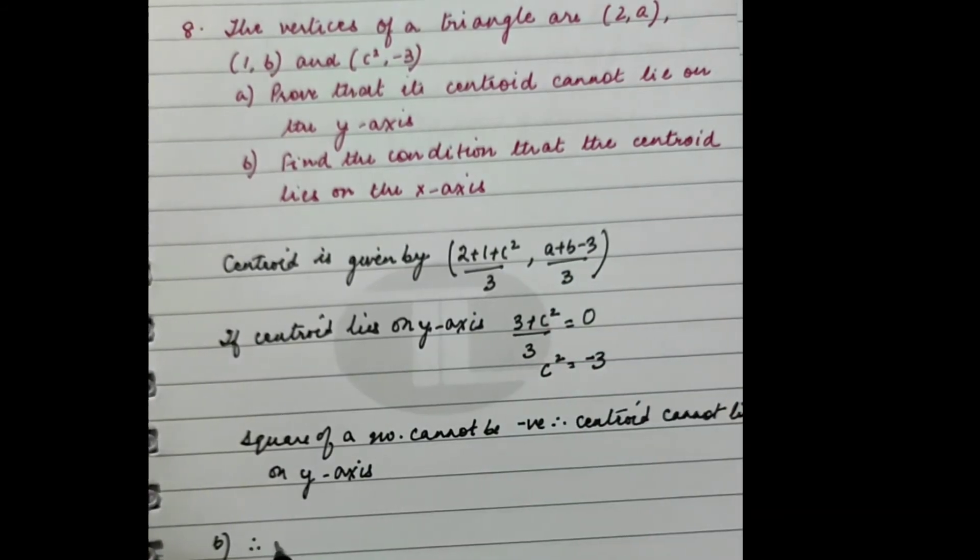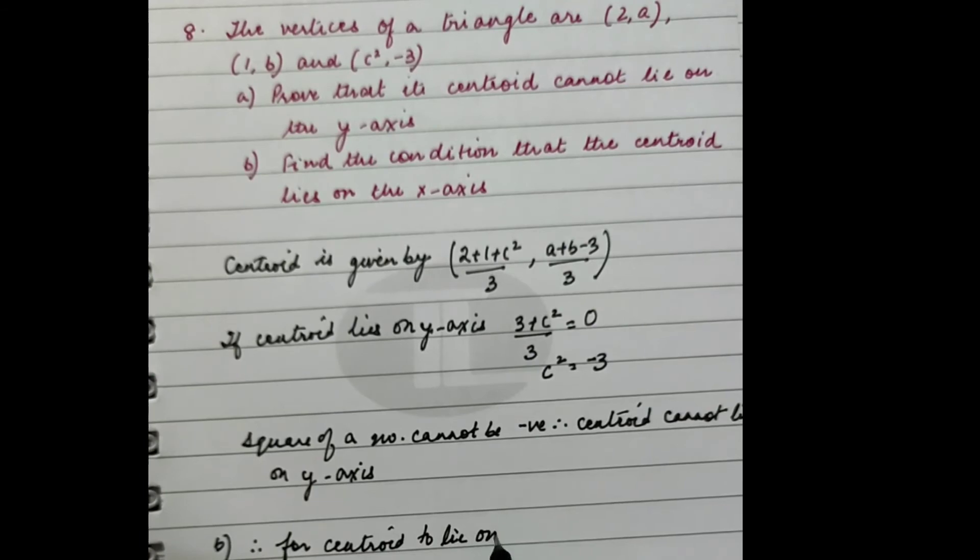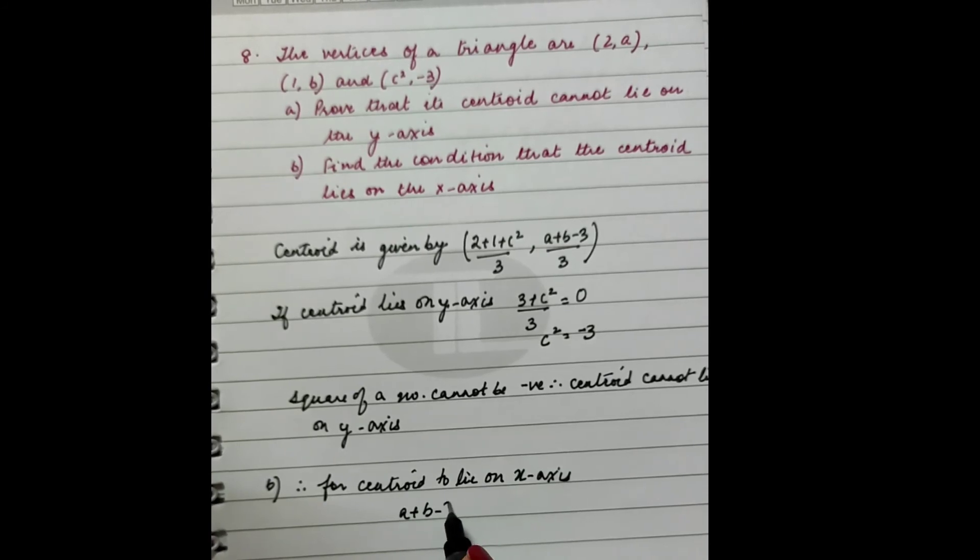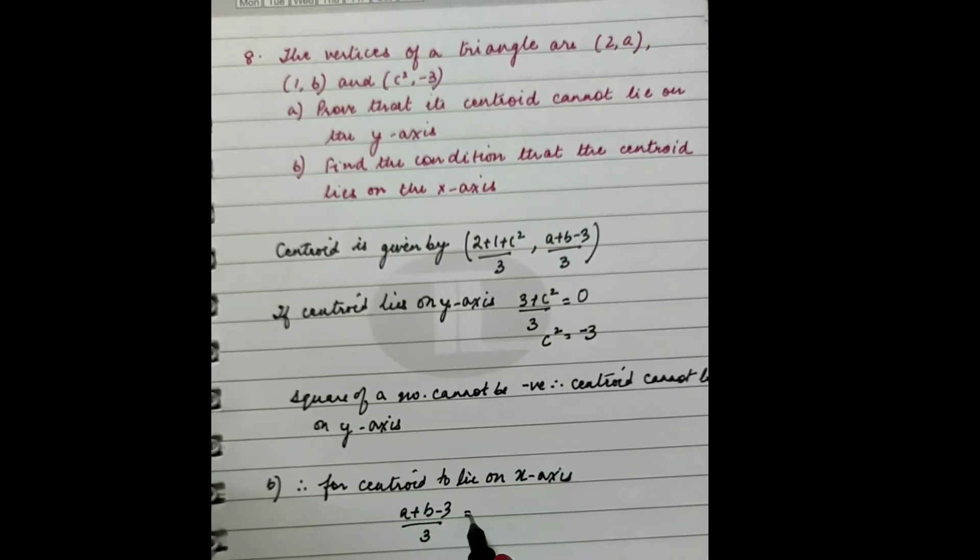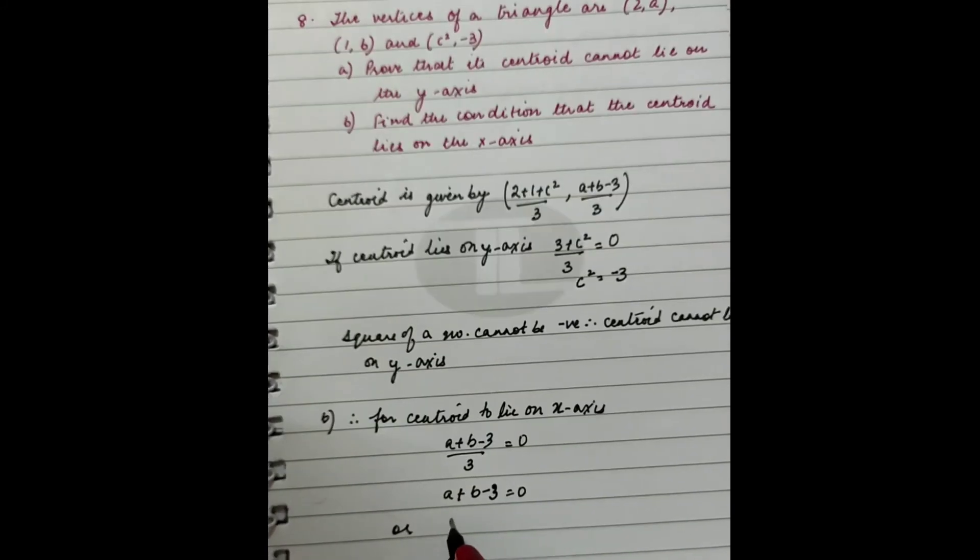Therefore, for the centroid to lie on the x-axis, I can say (a + b - 3)/3 is equal to 0. That means a + b - 3 is equal to 0, or a + b is equal to 3.